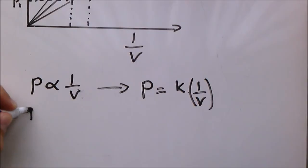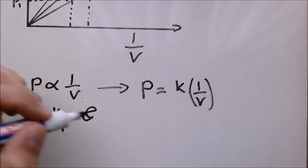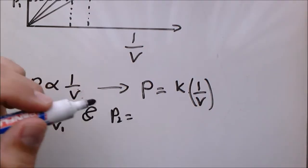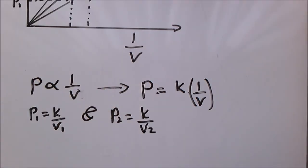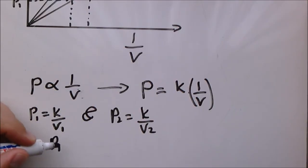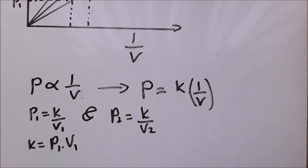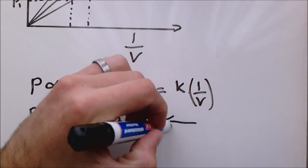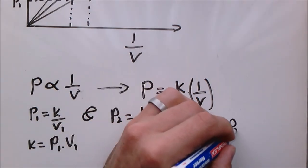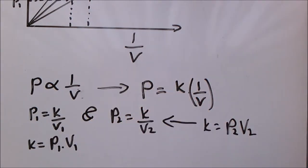If we have two scenarios like that, we know that P1 will be equal to K over V1, and P2 will be equal to K over V2, which means that constant K will be equal to P1 times V1, but it's also equal to P2 times V2.